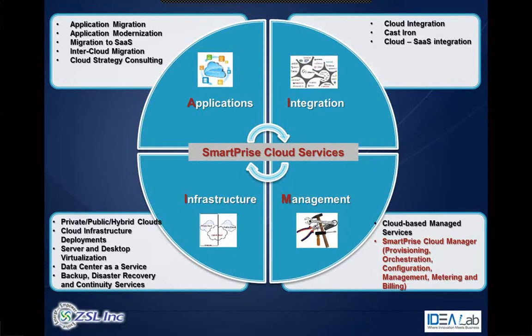On the integration side: cloud integration connects different applications running on different clouds, private infrastructure, or data centers. VSL uses CastIron as a primary integration tool and has a senior architect who is a former CastIron team member. SaaS integration is also offered. On the infrastructure side: public, private, and hybrid cloud deployments using VMware, Cloud.com, OpenStack, Ubuntu, and Eucalyptus. Server and desktop virtualization, data center as a service, backup, disaster recovery, and continuity services are also provided.